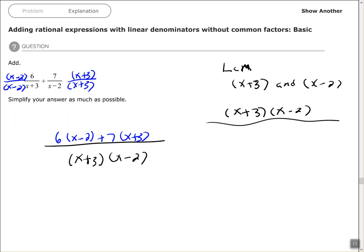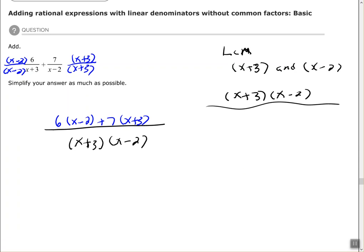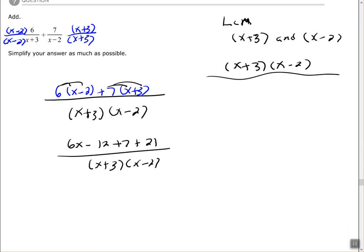Once you get that set up, you want to clear your parentheses up top. Let's distribute the 6, distribute the 7. Combine like terms so I have 6x plus 7x is 13x, positive 9. I cannot factor anything from the 13x plus 9, so this would be my final answer.